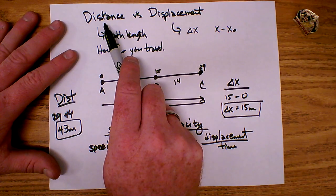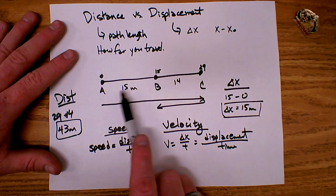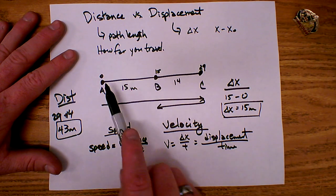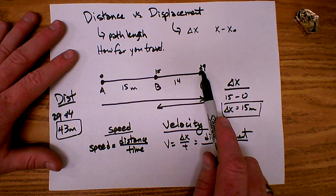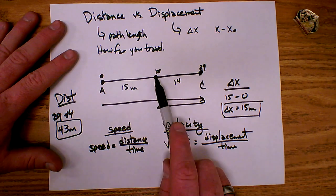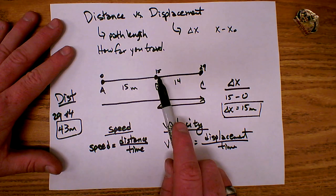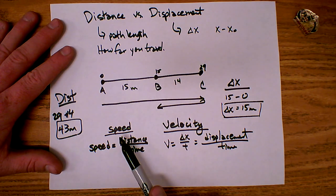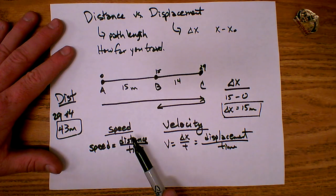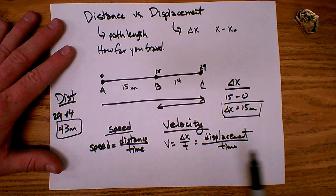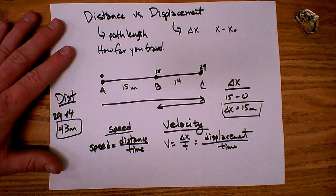For distance, the direction you travel doesn't matter — I traveled 29, and then I traveled 14. For displacement, the direction does matter: I traveled 29 in this direction and then 14 back, so I got a different answer for displacement than I had for distance. Similarly, for speed the direction doesn't matter because it's distance over time, whereas for velocity the direction does matter because it is displacement divided by time. That's the difference between distance and displacement, and speed and velocity.